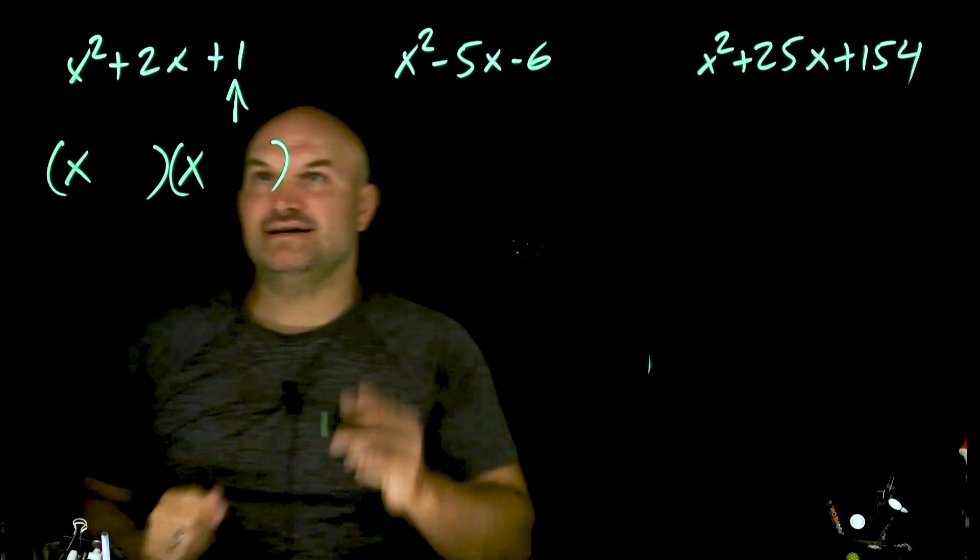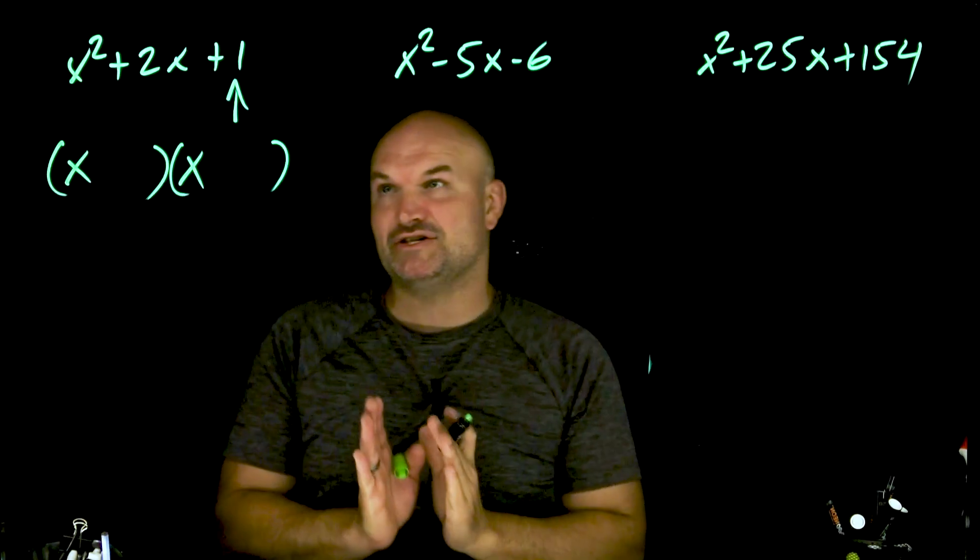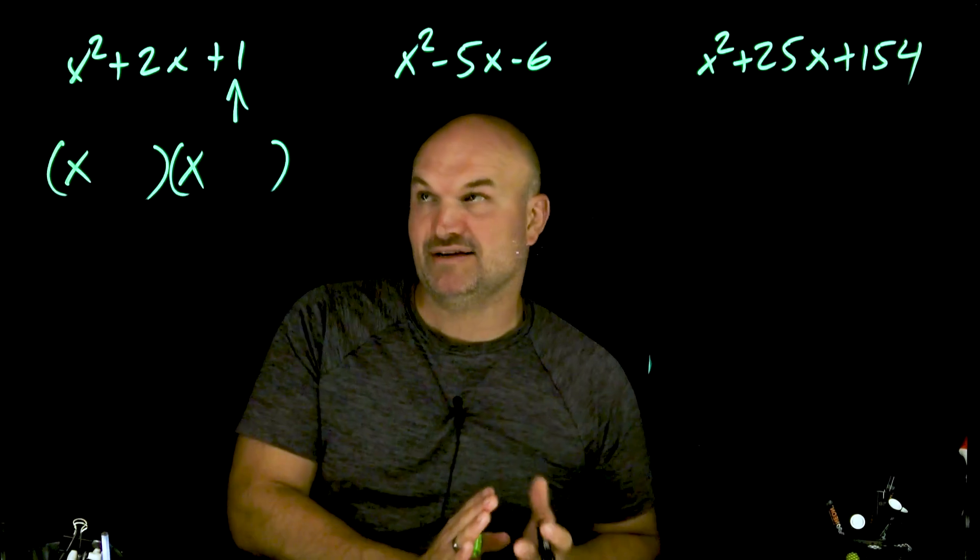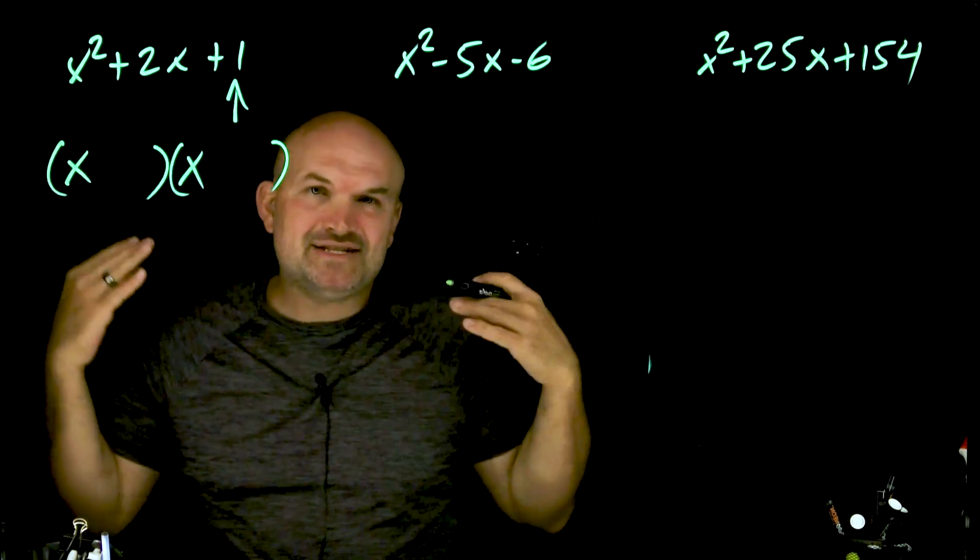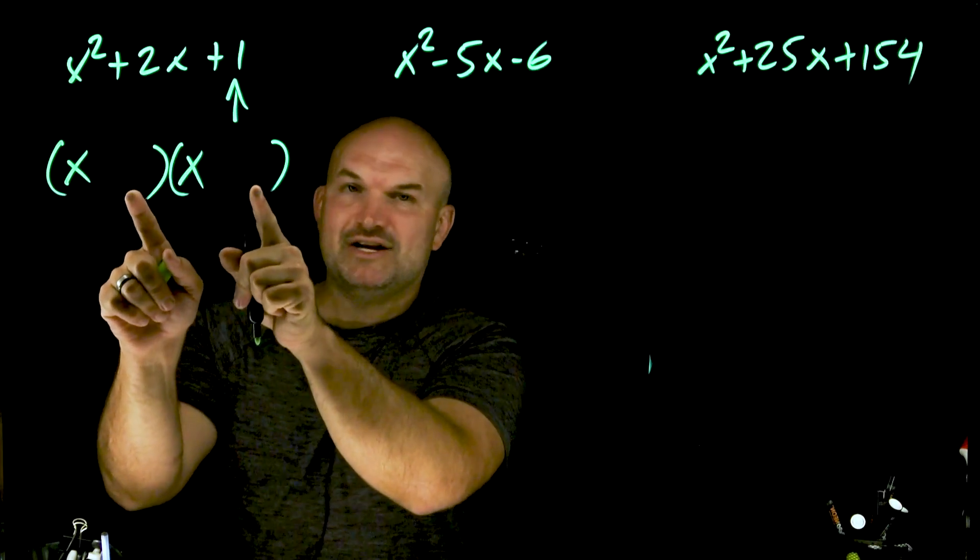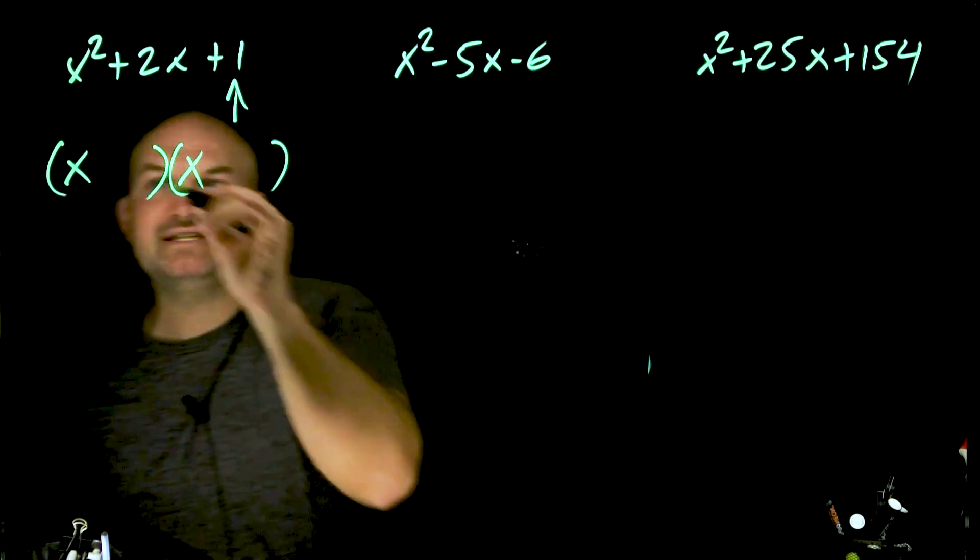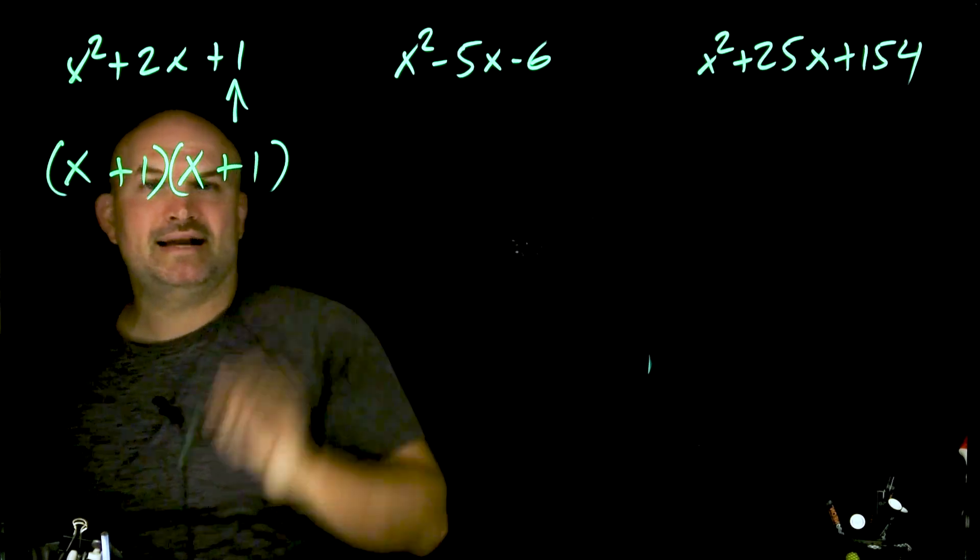So the important thing is, if I know my last term is positive, I know my last two factors either have to be both positive or both negative. But then we look at our middle term. It makes no sense for my two factors to be negative 1 and negative 1, because they're not going to add to give me a positive 2. The only option I have is a positive 1 and a positive 1.